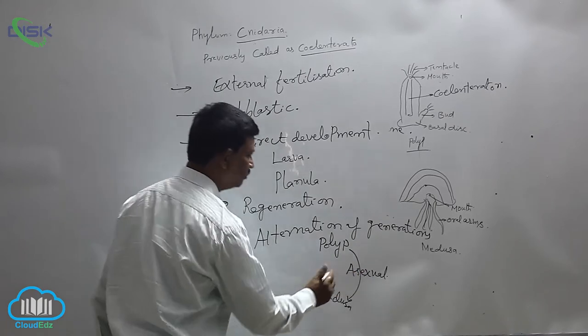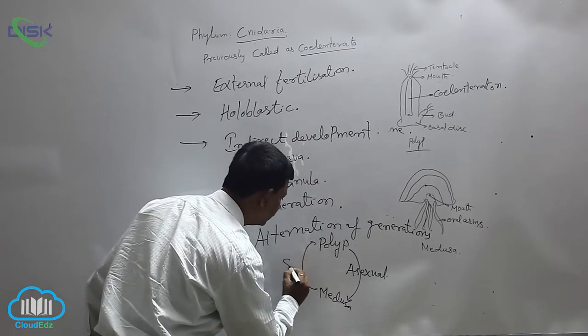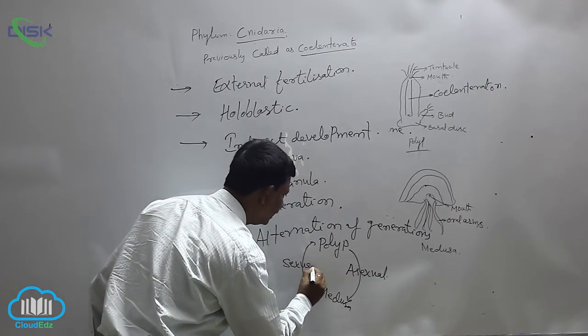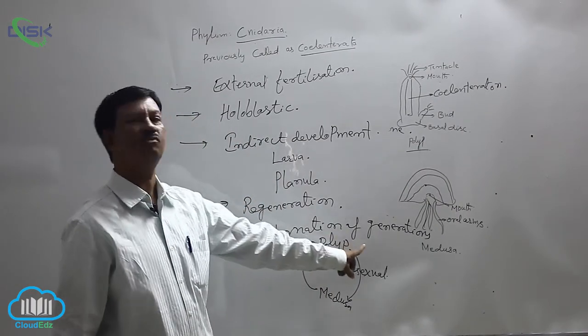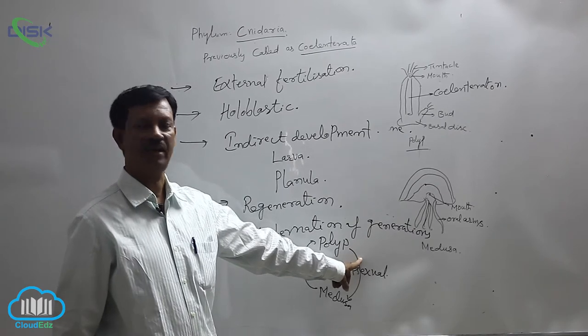Medusa does not undergo asexual reproduction; they undergo sexual reproduction and produce polyp. These two alternately take place, which is why alternation of generations is present in this phylum.